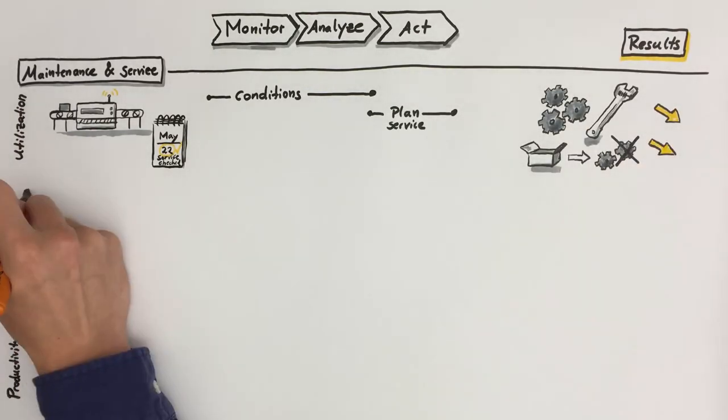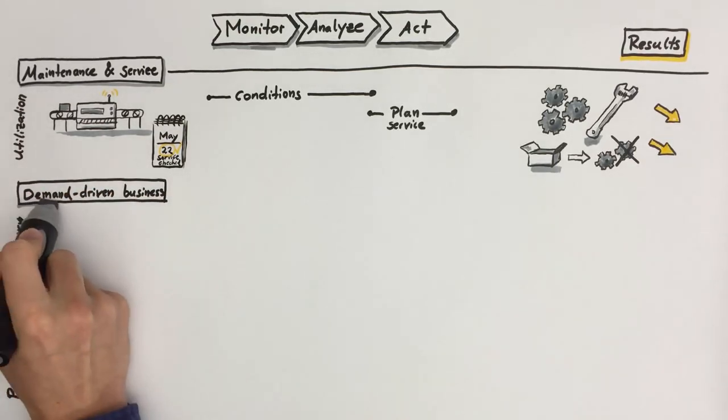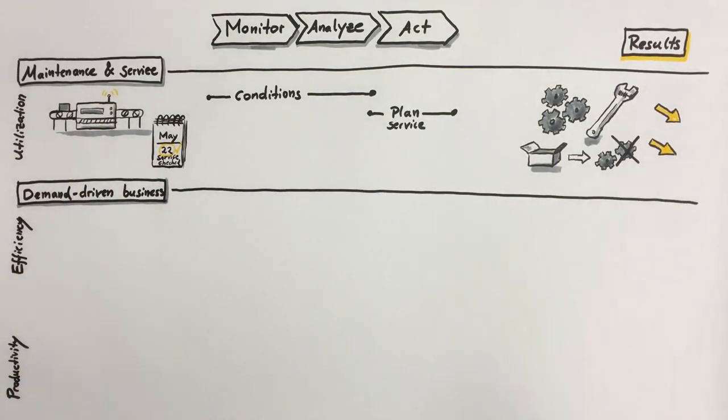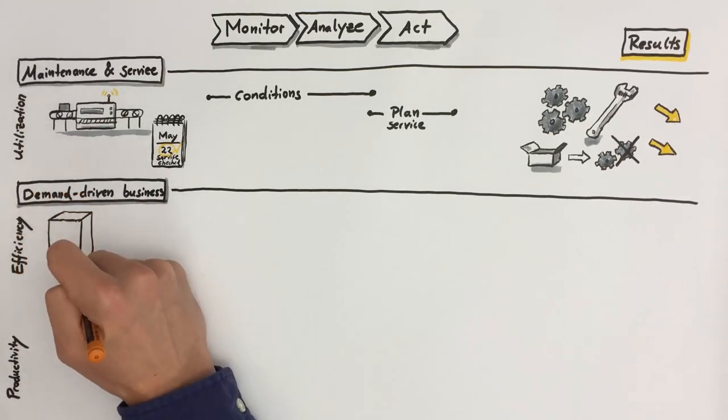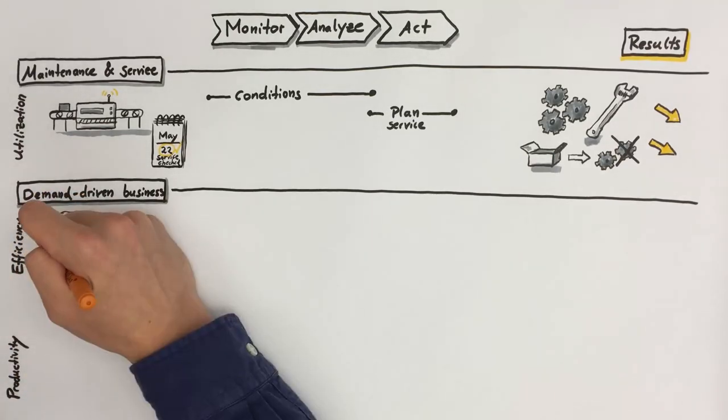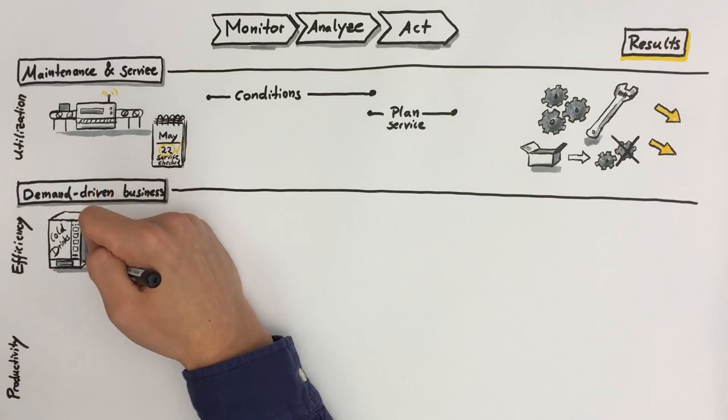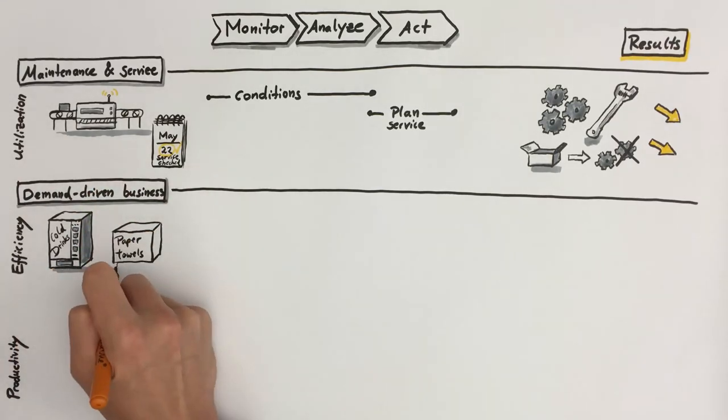Talking about efficiency, a good way to start is probably to enable demand-driven business. Think of a product that is sold by a vending machine. It could be a drink or the towels in a restroom or anything else.